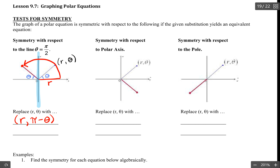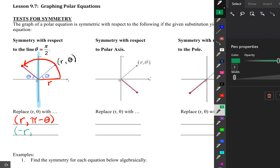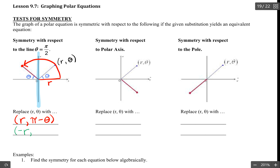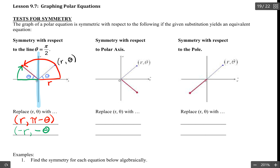Now writing it with negative r: starting at negative r, going r in the negative direction, and rotating this angle. Because I'm going clockwise, the angle is negative theta. So the coordinate is negative r comma negative theta. Those are our two forms for symmetry with respect to theta equals pi over 2.